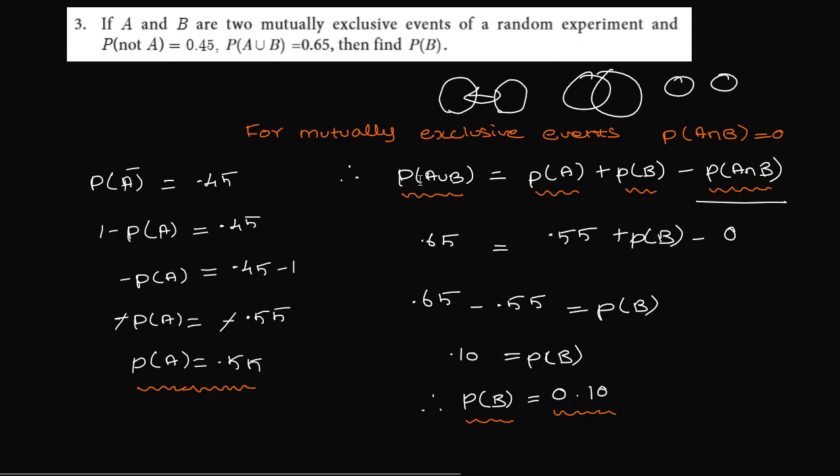In the formula substitute: P(A union B) 0.65 equals P(A) 0.55 plus P(B). Mutually exclusive, so P(A intersection B) is 0.